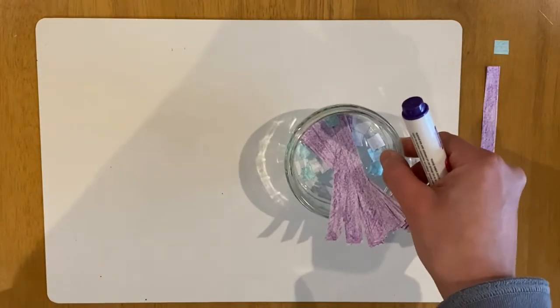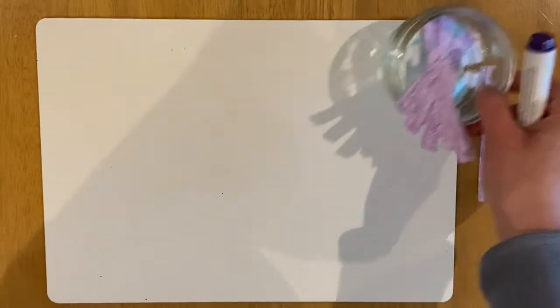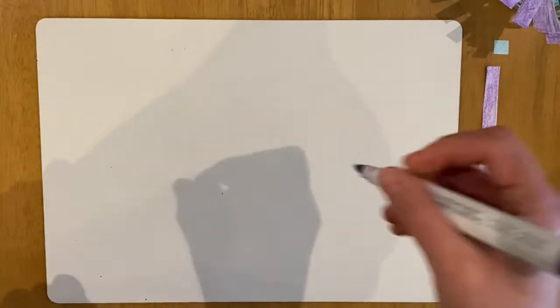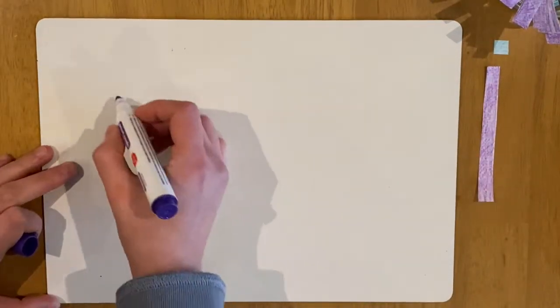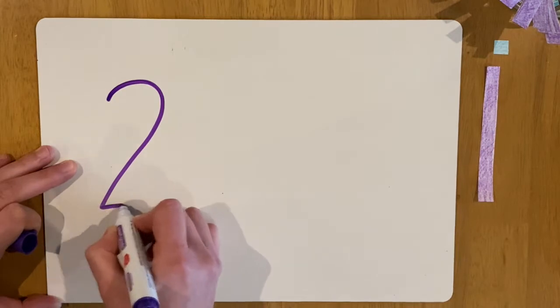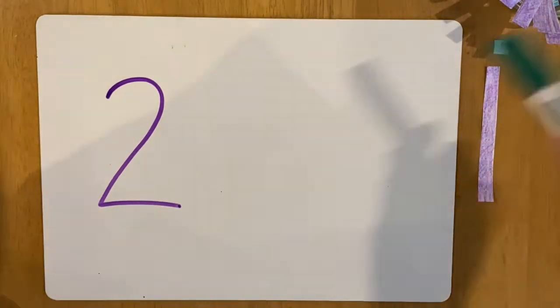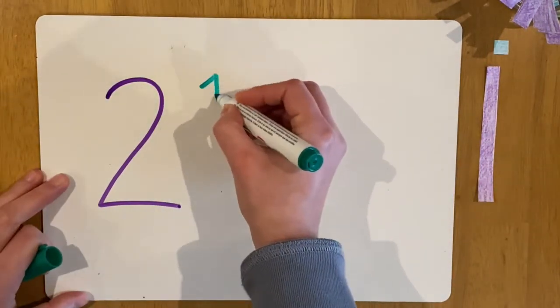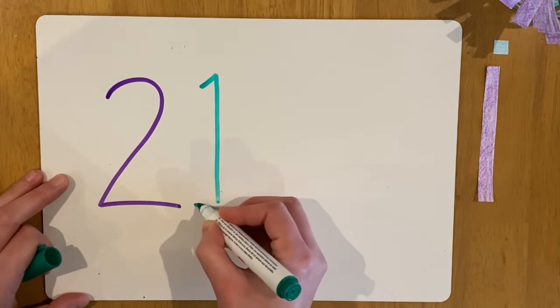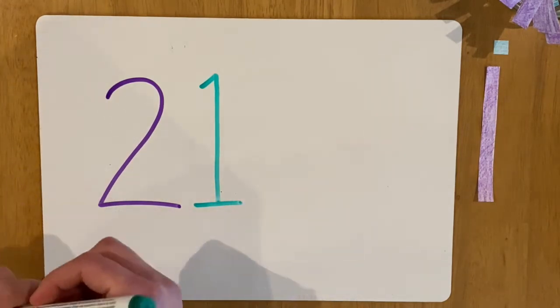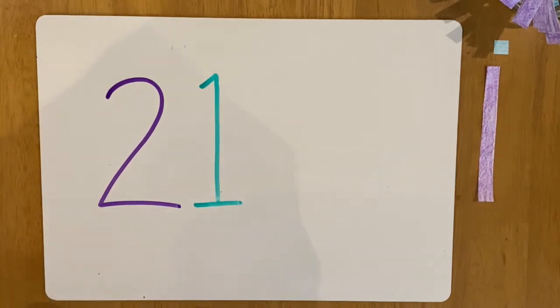Your next task is to use the deans that you made to make the following numbers. So the first number I want you to make is 21. I want you to use your deans to make 21. So you're going to pause the video and then you're going to press play when you're finished so you can see how I made it.